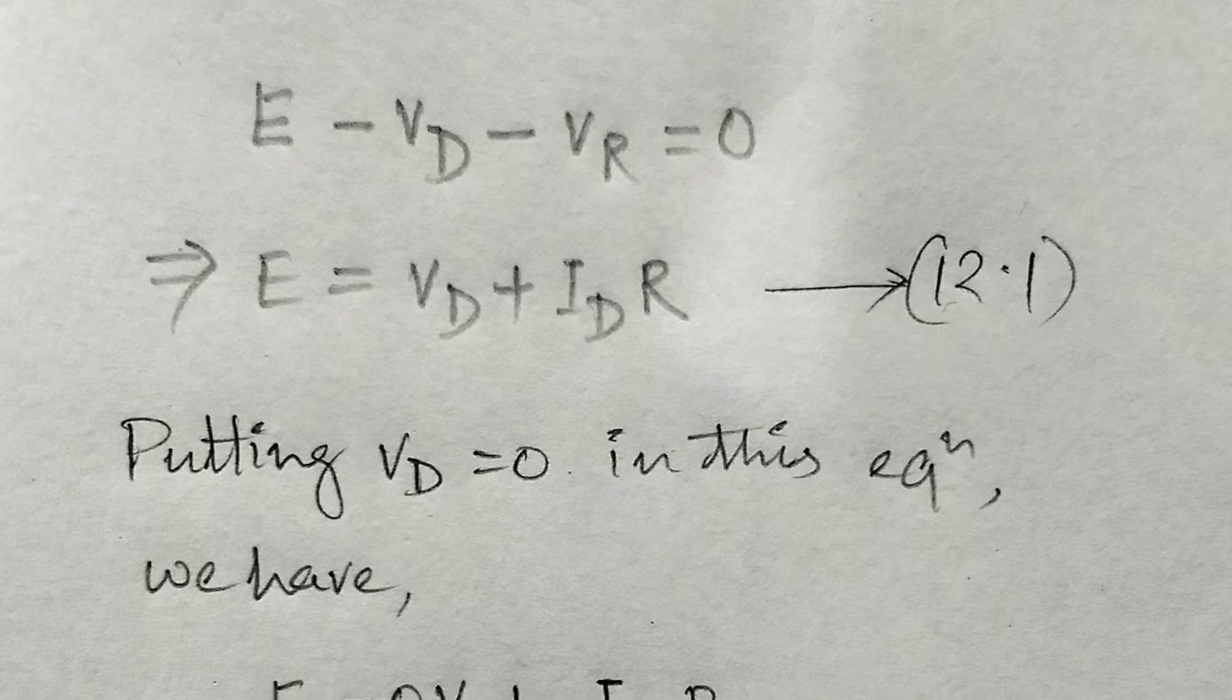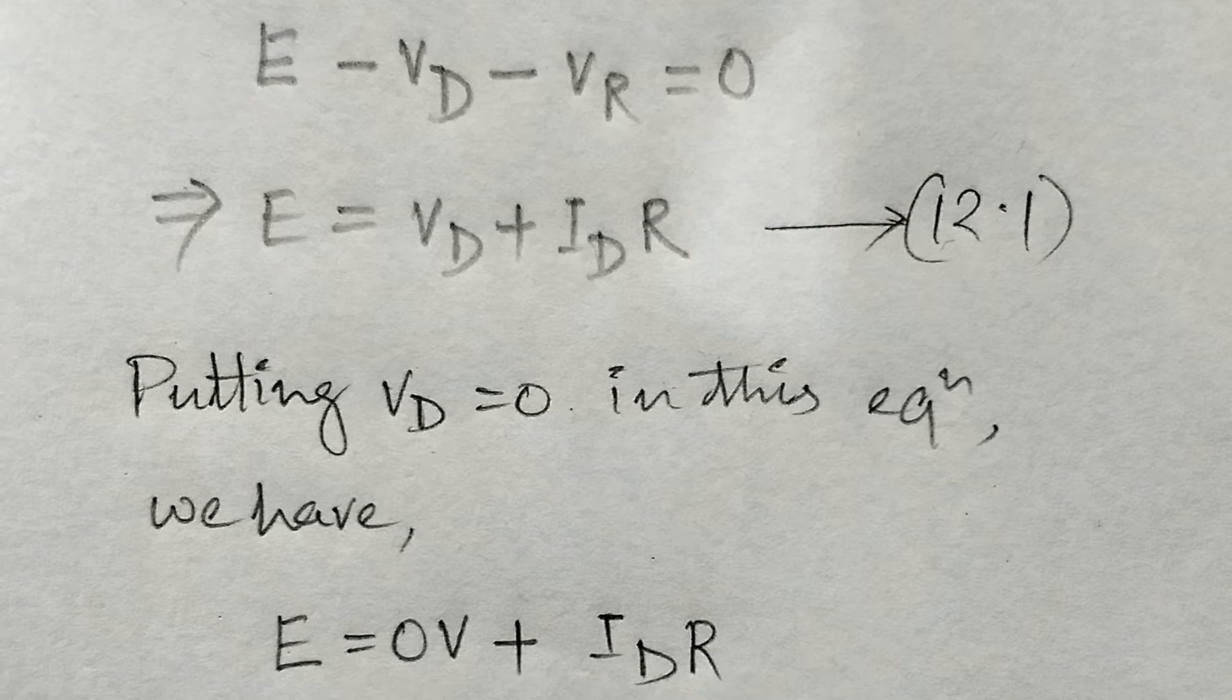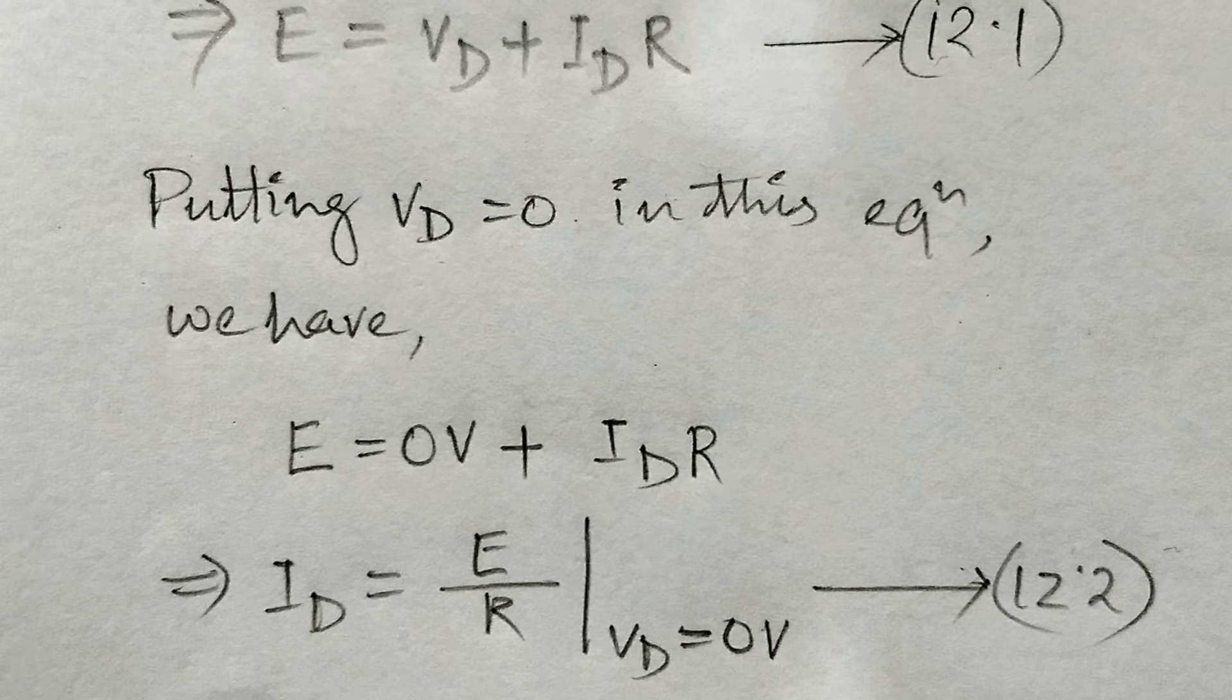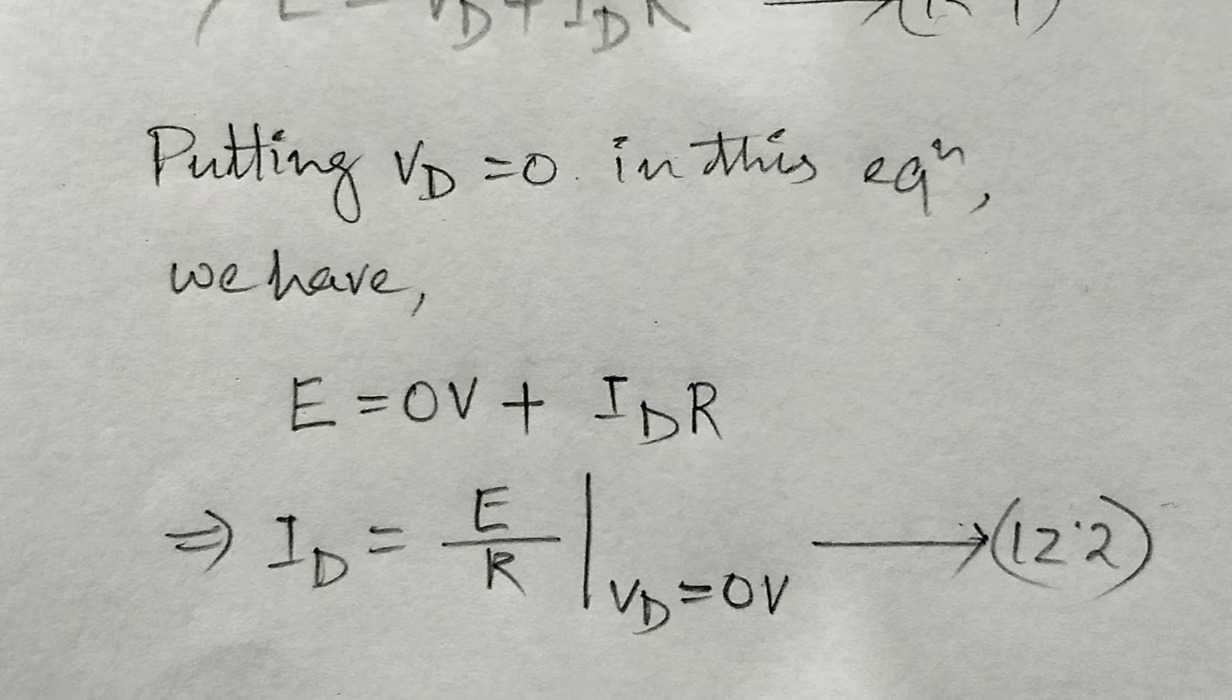If we set Vd is equal to zero in equation 12.1, we have the magnitude of Id on the vertical axis.